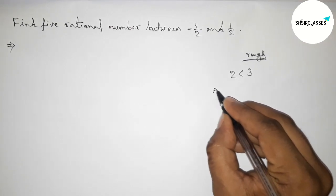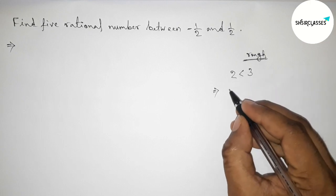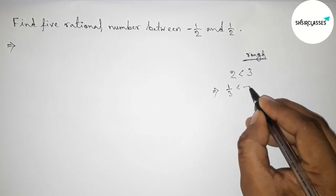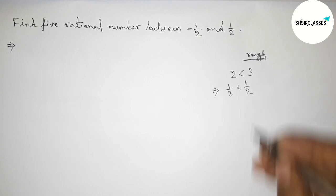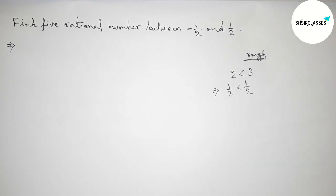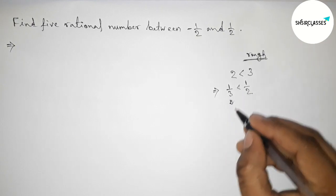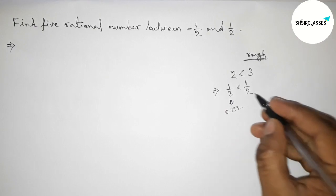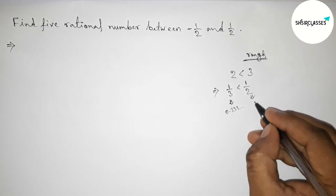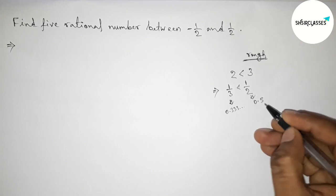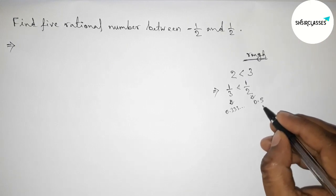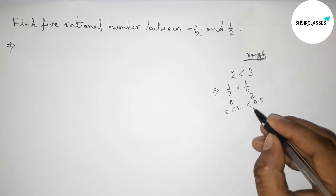So now if you take inverse of both numbers, then the inequality symbol will be changed. That is 1 by 3 less than 1 by 2, because the value of 1 by 3 equals 0.333 continuous, and the value of 1 by 2 is 0.5. So here 0.5 is greater than 0.33 continuous.